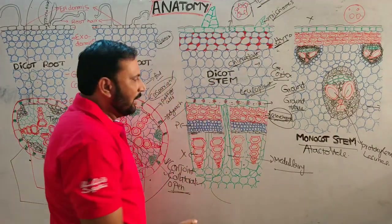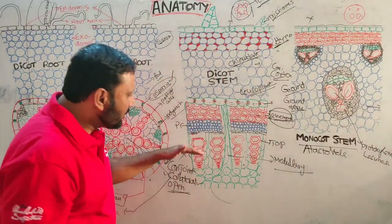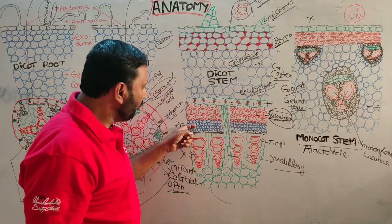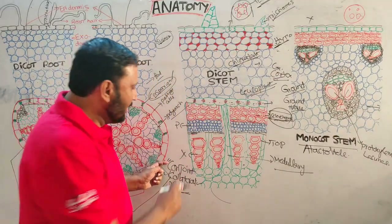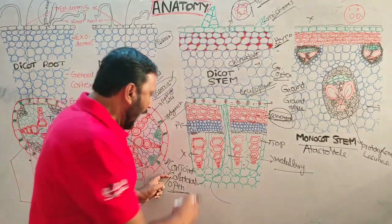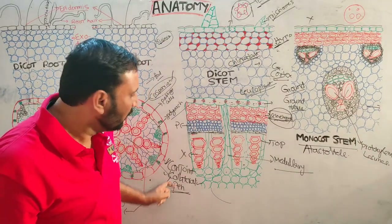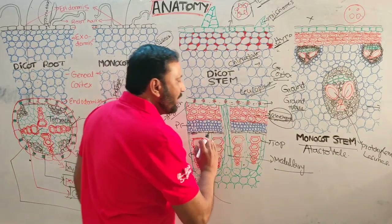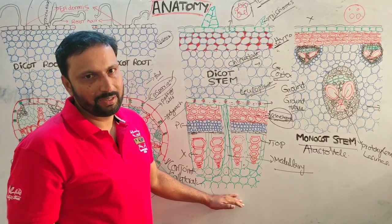Each vascular bundle is top-shaped. Xylem and phloem together form one conjoint bundle; both present on the same radius, so it is collateral. There is cambium between xylem and phloem, making it open. So it is an open conjoint collateral vascular bundle. Medullary rays are present between vascular bundles, and medulla is present at the center.